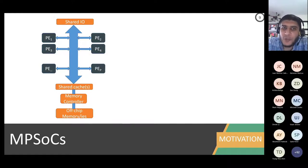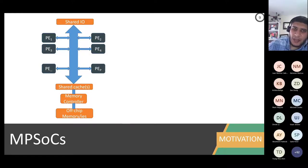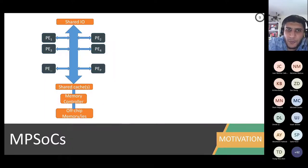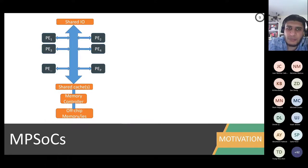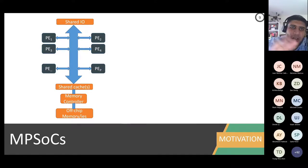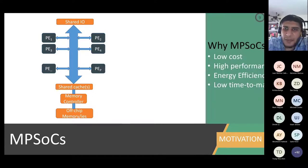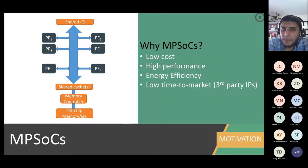The solution to all of this is the system on a chip — having different processing elements such as CPUs, GPUs, FPGAs, and ASICs sharing some resources and executing different tasks. People argue that multi-processor systems on a chip should be used for modern embedded systems because they have much lower cost, provide high performance, are energy efficient, and allow low time to market because you can license IP blocks.